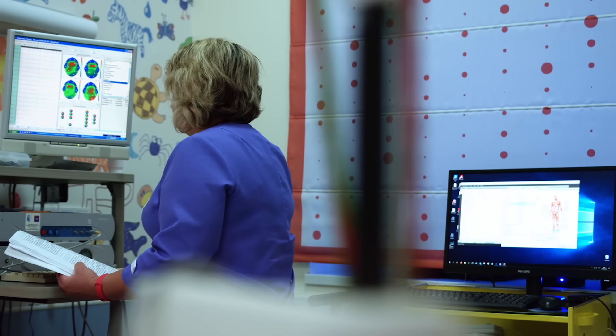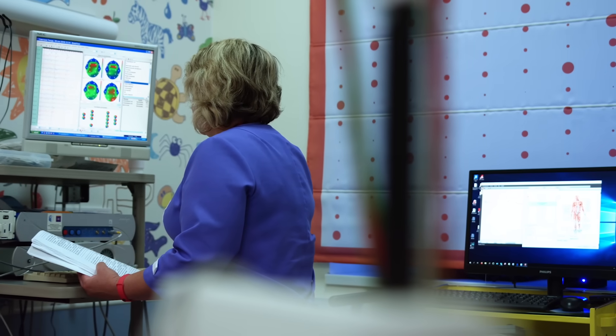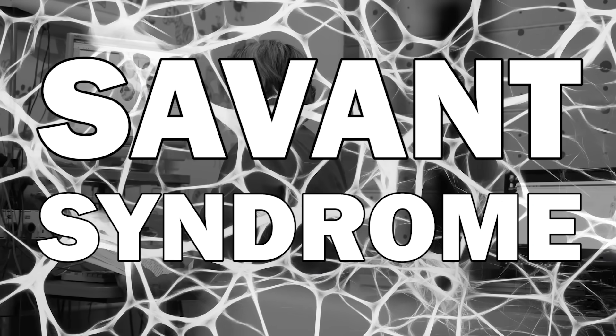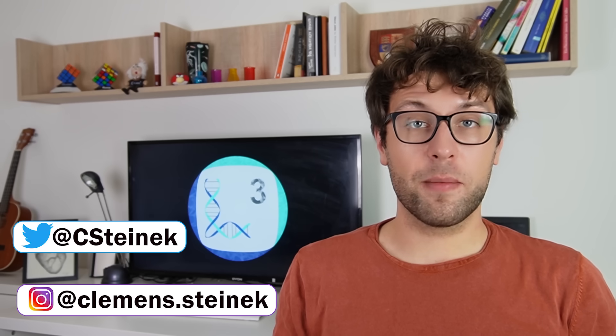When his family realized that the boy had these new abilities they went to see a doctor. After inquiring about the accident, the doctor ran some tests and it became clear: Orlando had Savant syndrome. Savant syndrome is a condition that gives people incredible but narrow talents. My name is William Steinek and today we will talk about Savant syndrome and how seemingly ordinary people suddenly become extraordinary.